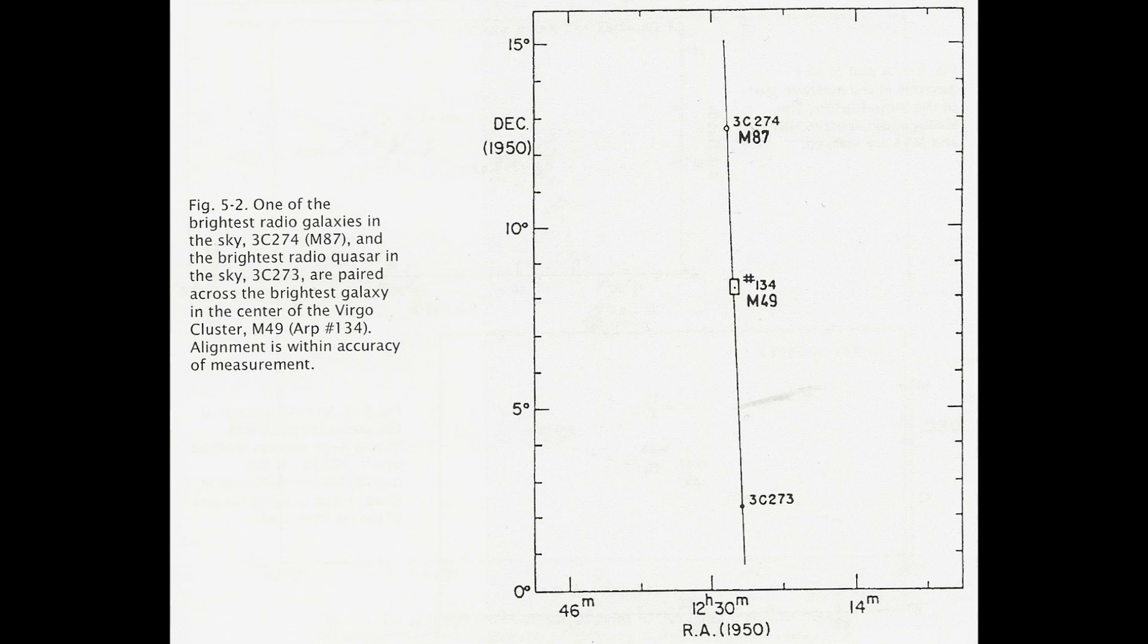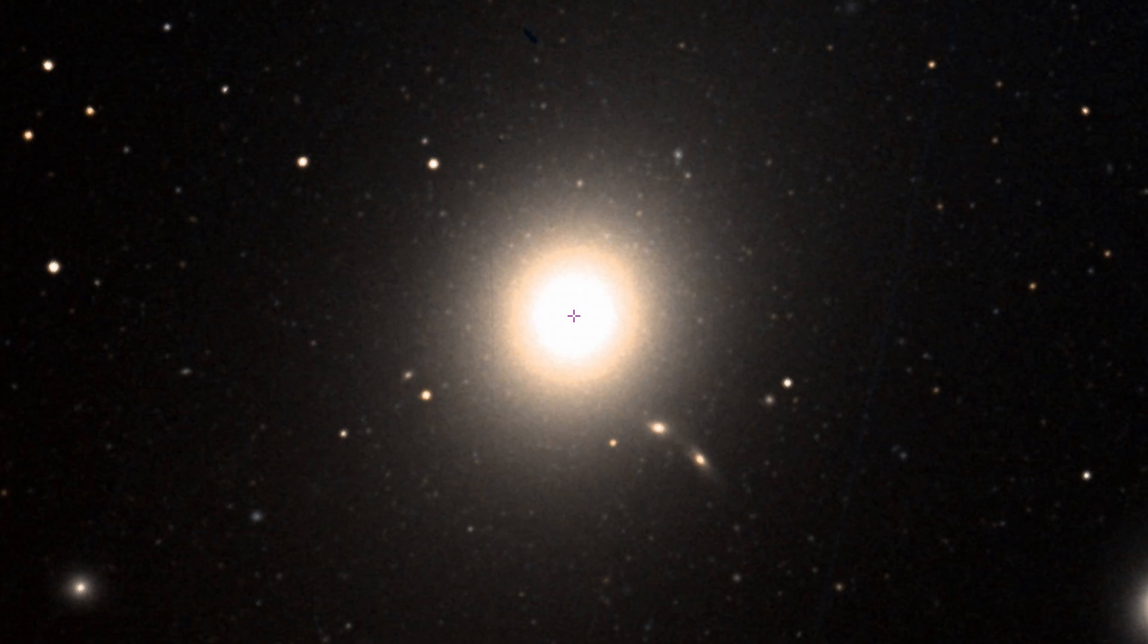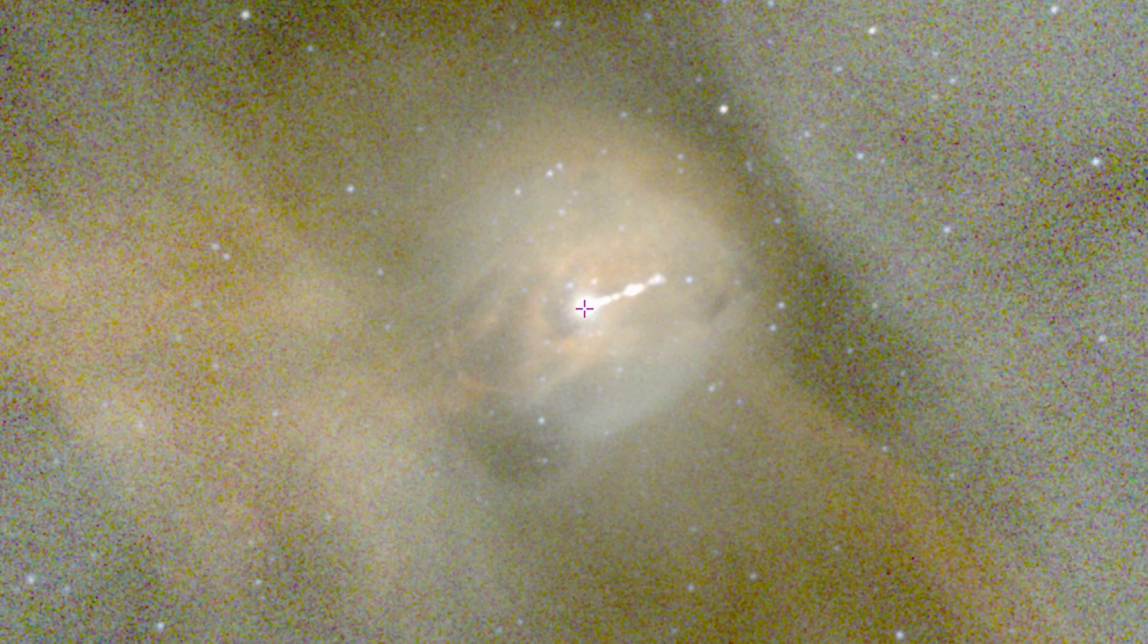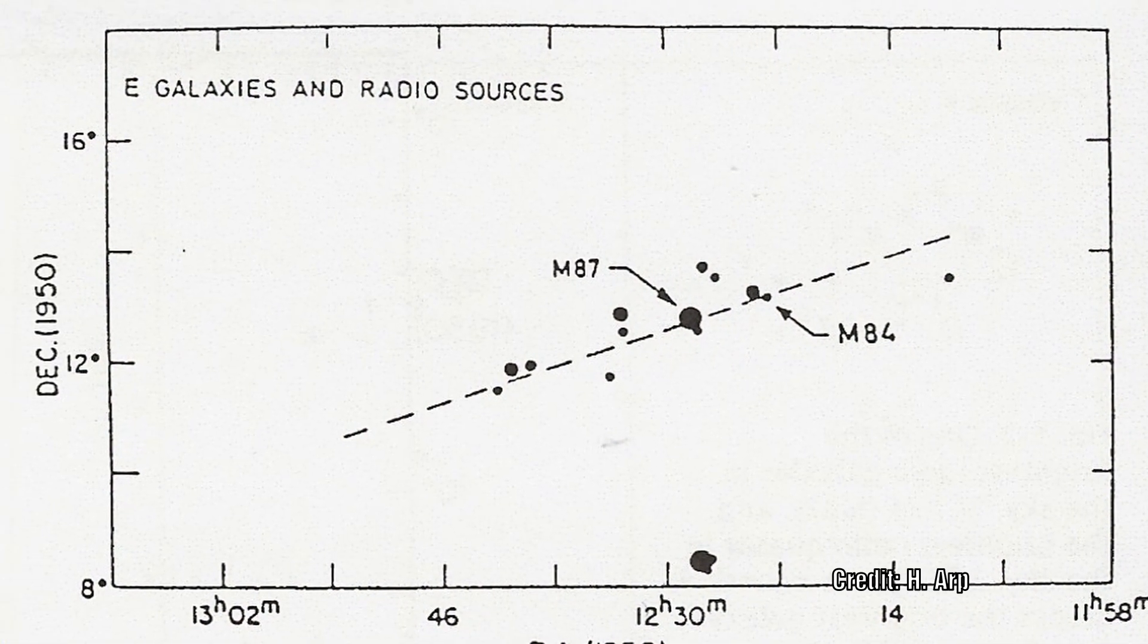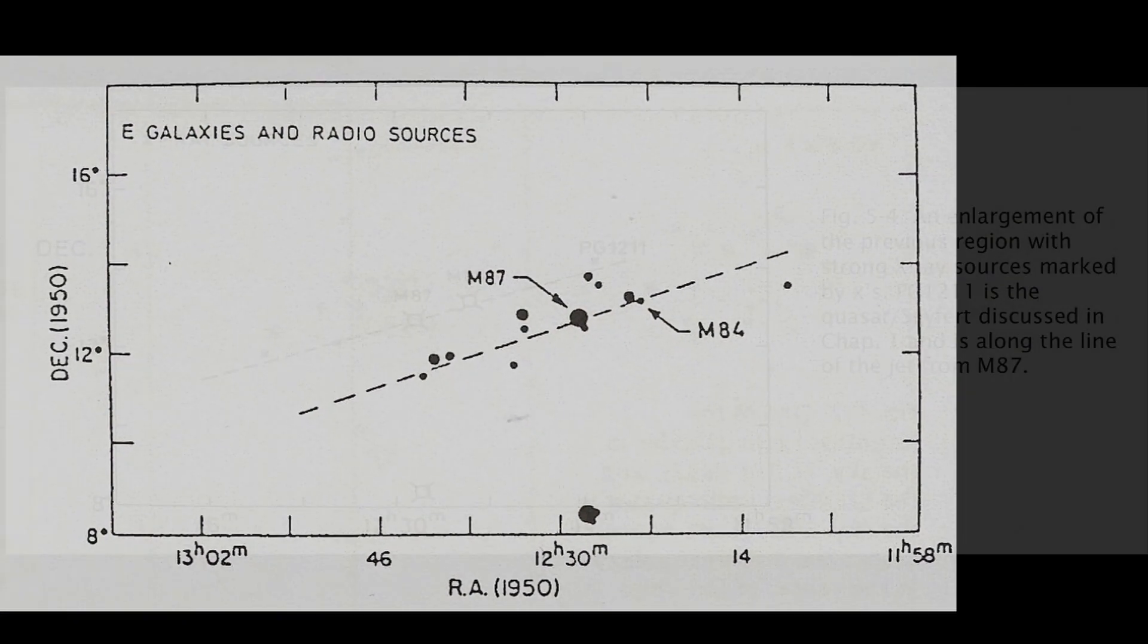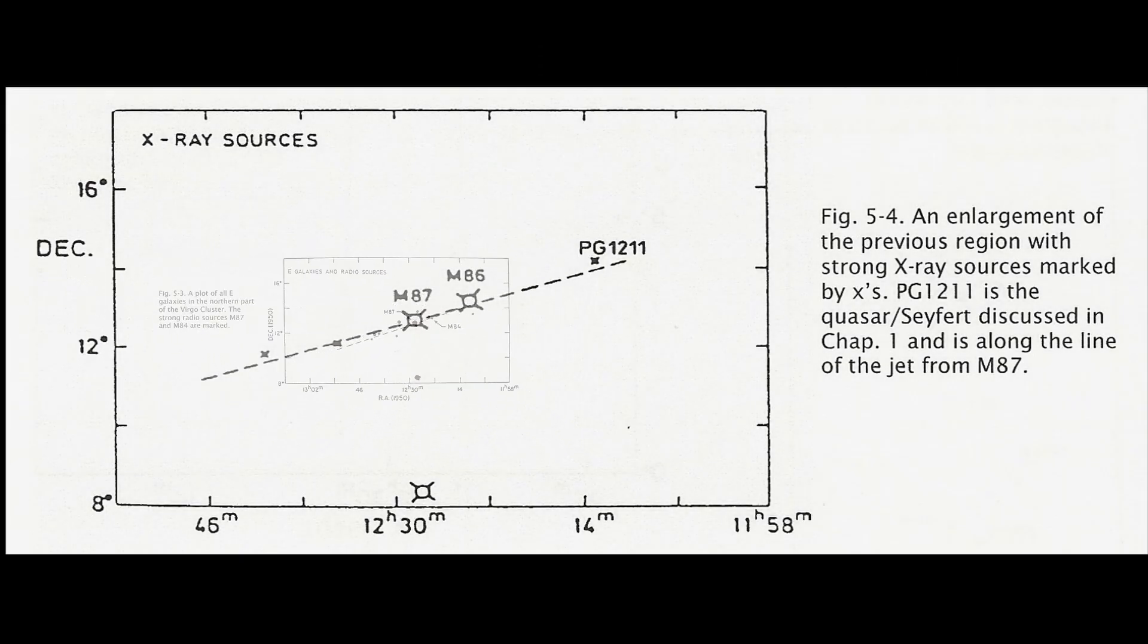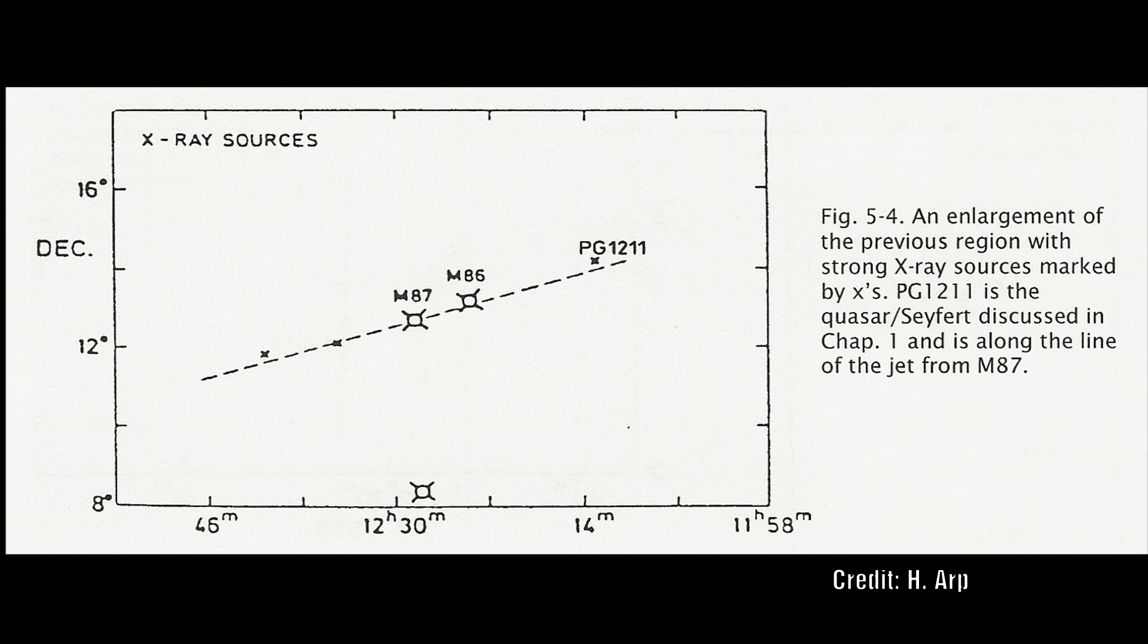If we now turn our attention to M87, then here we also find a series of smaller elliptical galaxies aligned along the famous blue jet with a galaxy. If we zoom out a little from here, even more x-ray sources are located along this same line including M86 and the bright quasar PG 1211 plus 143 that we covered in part one.